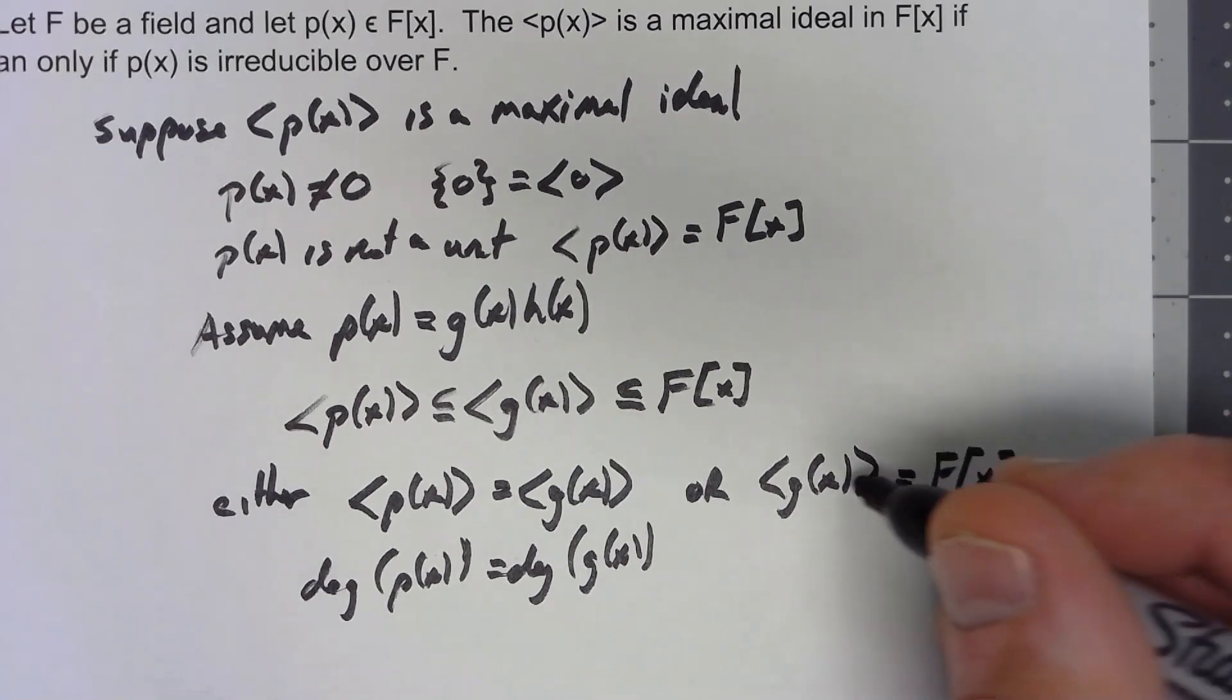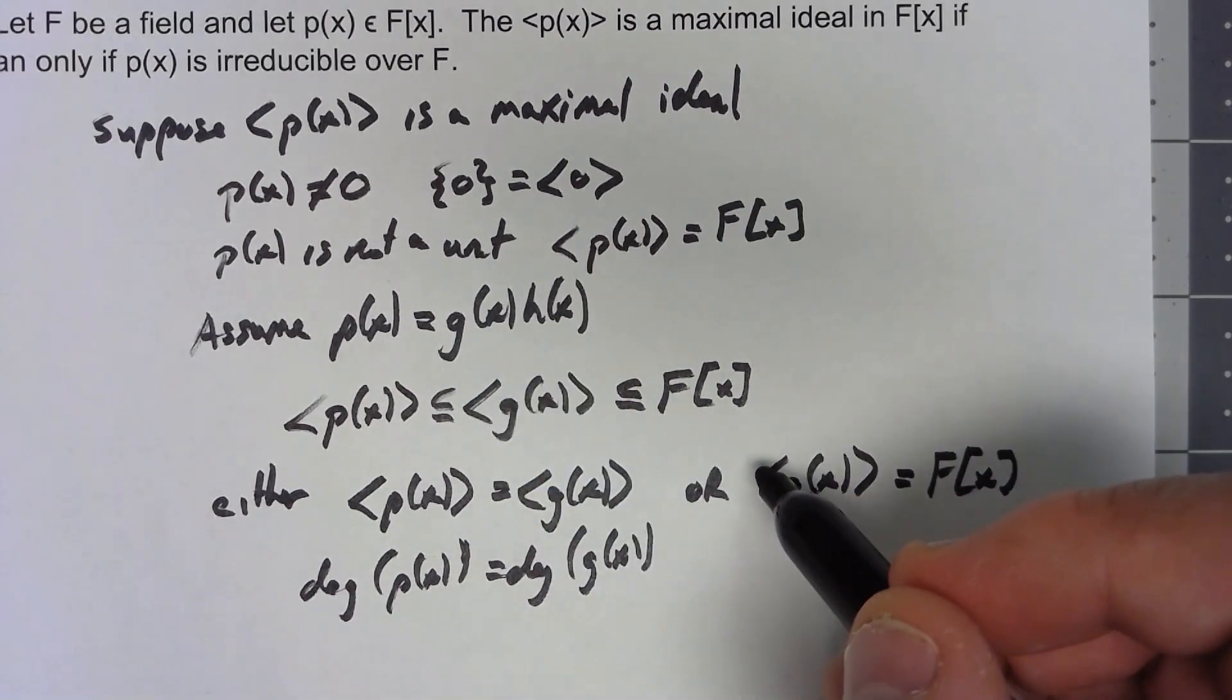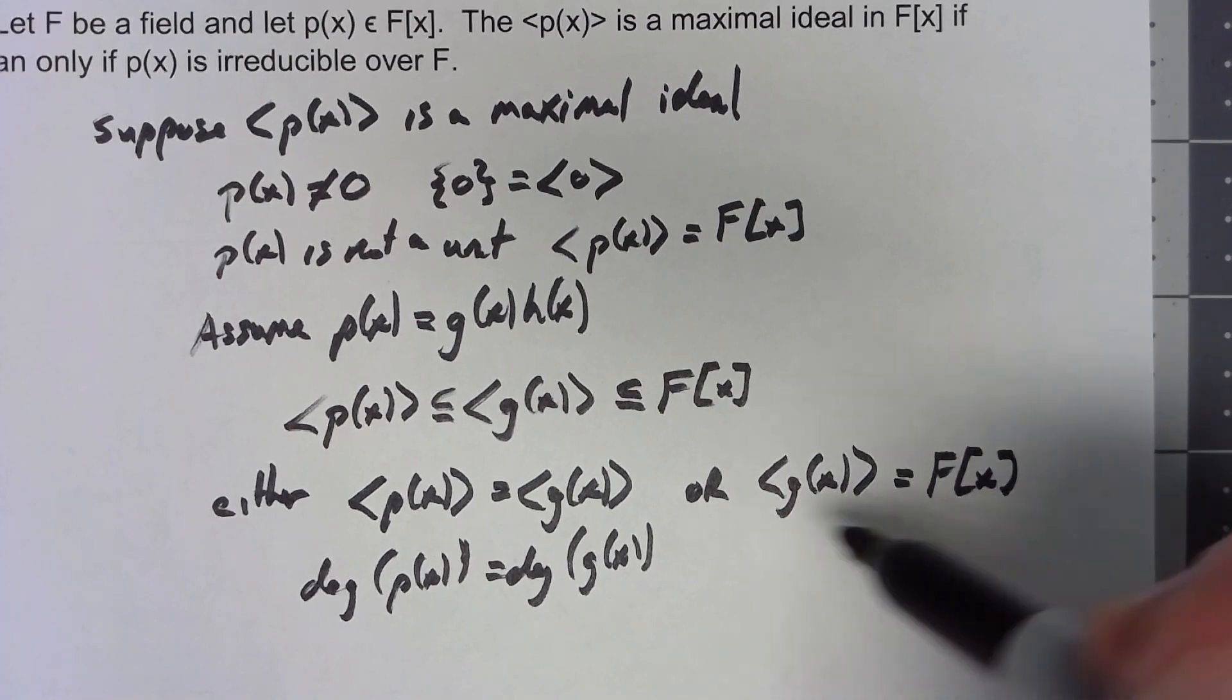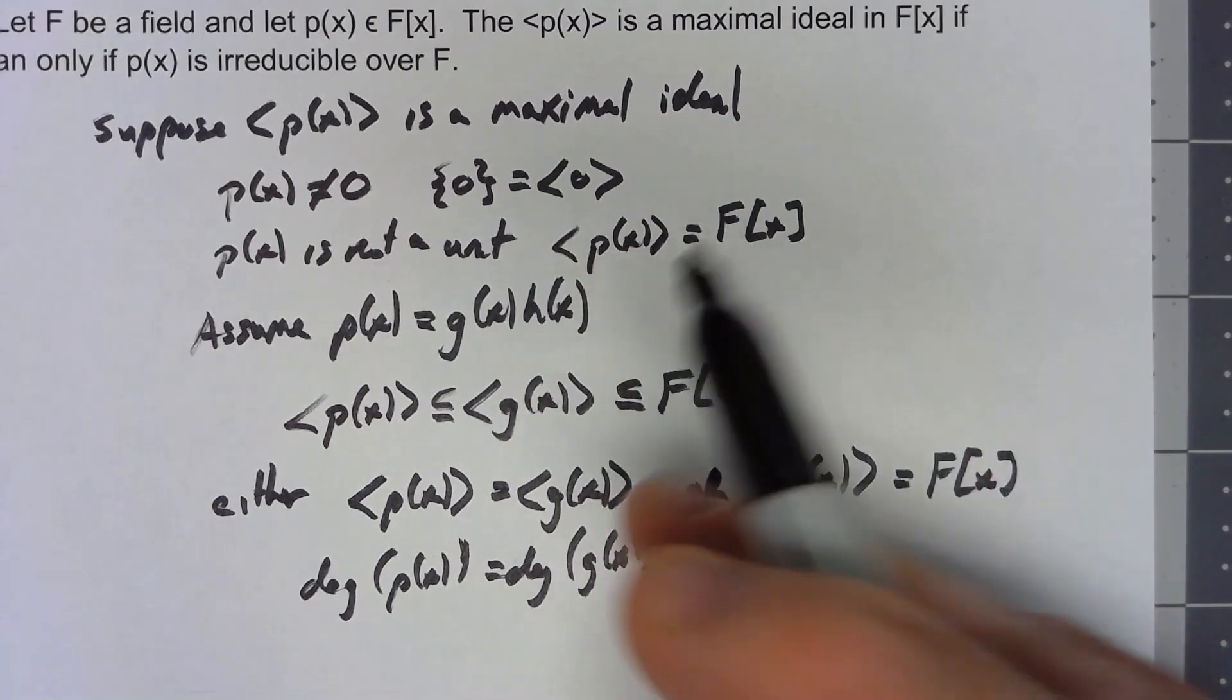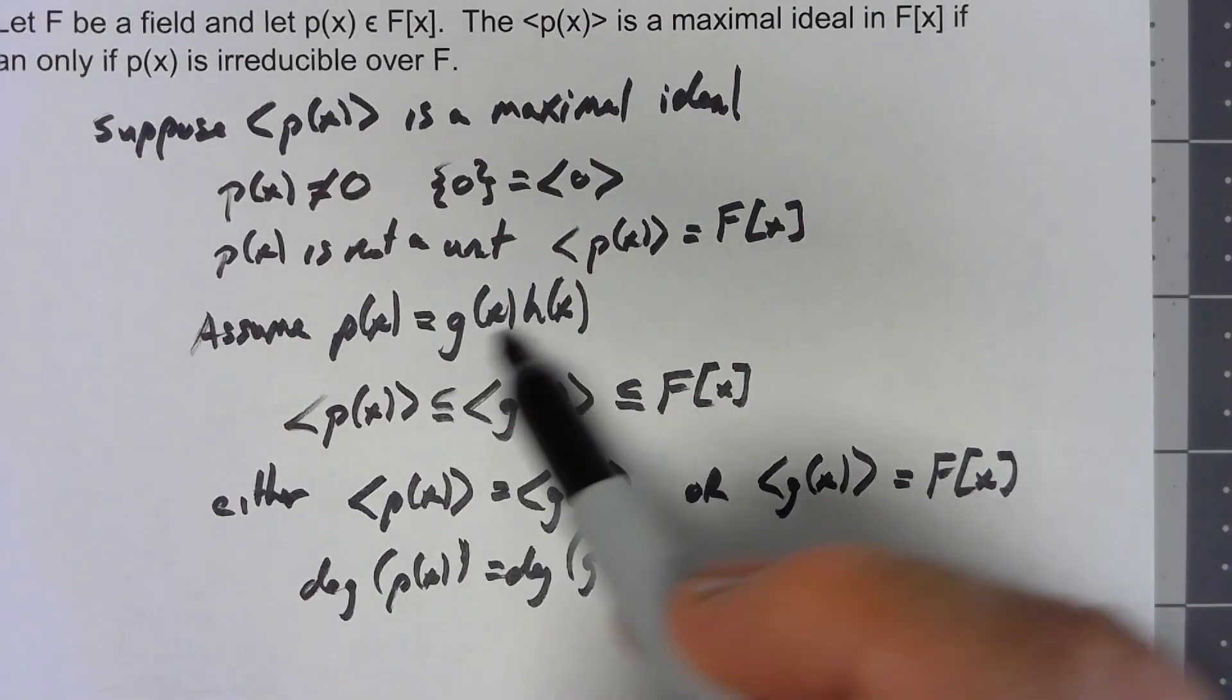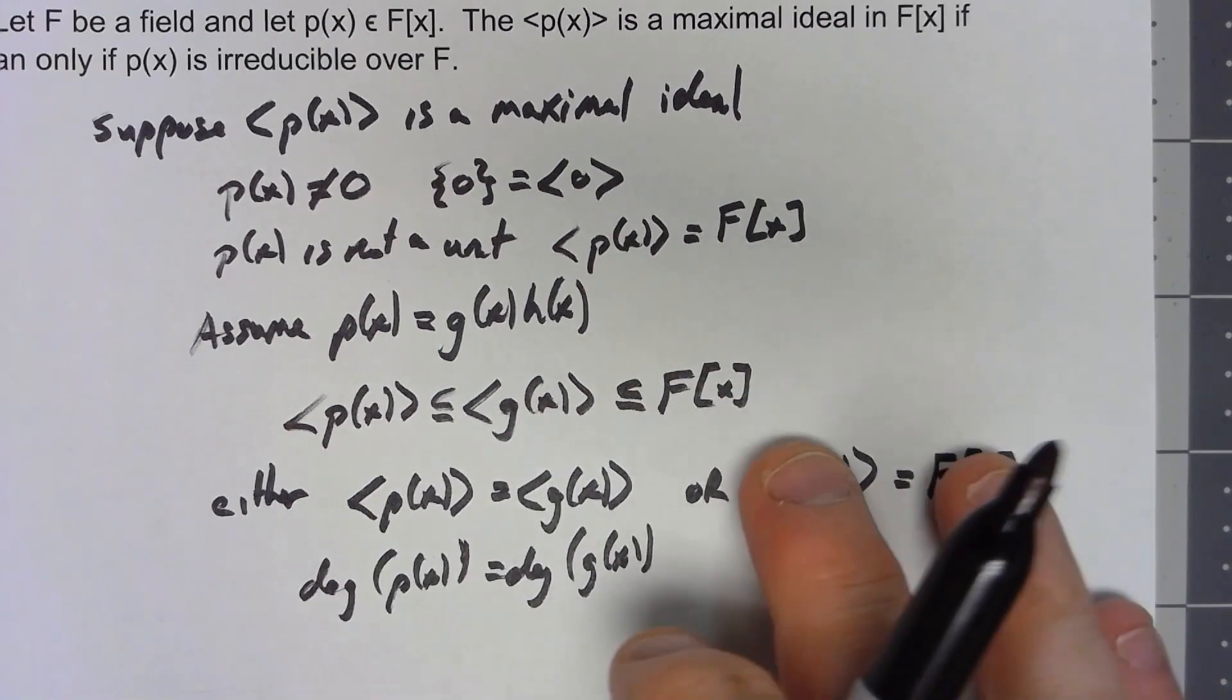Similarly, if g(x) equals F[x], that means that g(x) is a unit. If g(x) is a unit, then once again this is a trivial factorization. So there's no way that we can write p(x) as a product of two polynomials that both have lower degree than p(x).